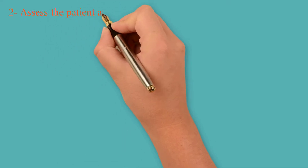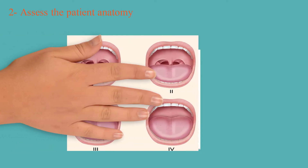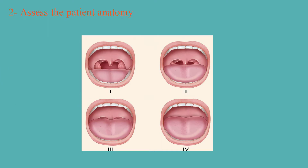Second step is to assess the patient's anatomy using the 3-3 rule. A normal patient can open his mouth to permit three of his own fingers between his incisors, three fingers along the floor of the mandible, and two fingers in the superior laryngeal notch. Also assess the Mallampati score to predict a difficult airway — it estimates the oral space. Class 1 predicts easy airway; Class 4 predicts extreme difficulty.